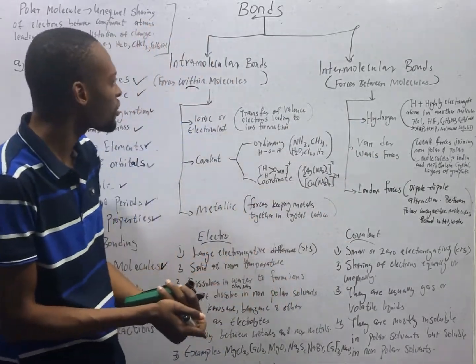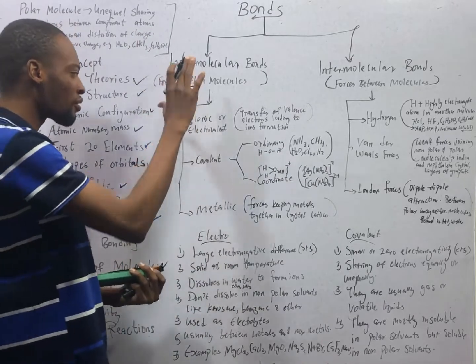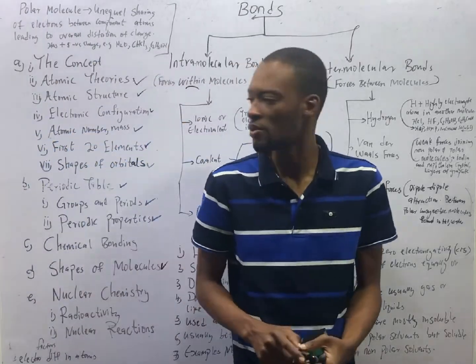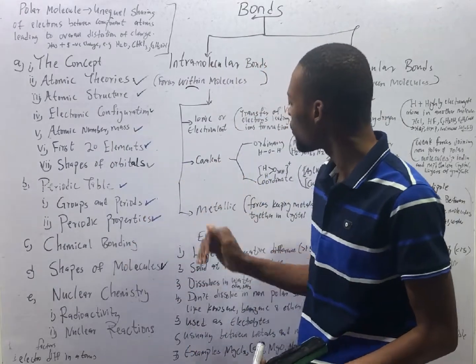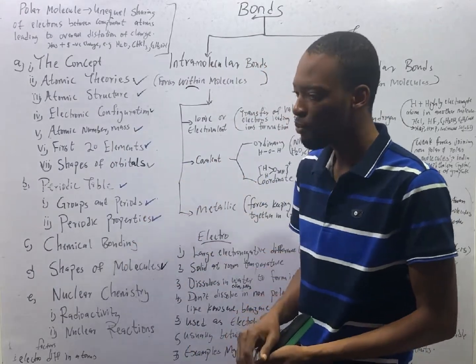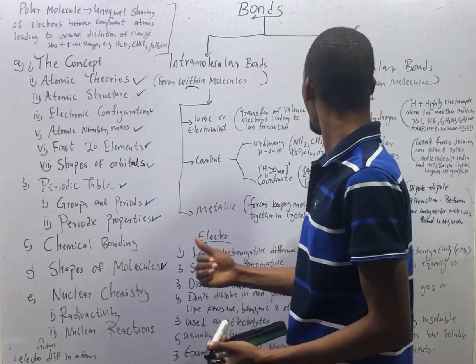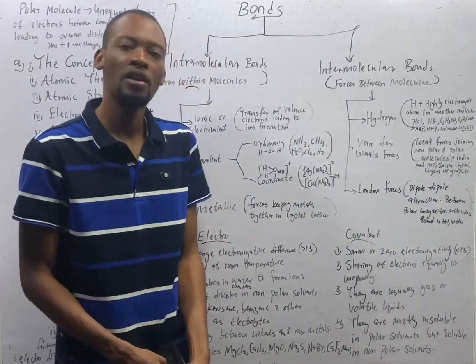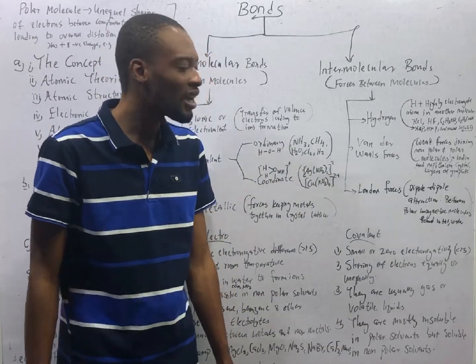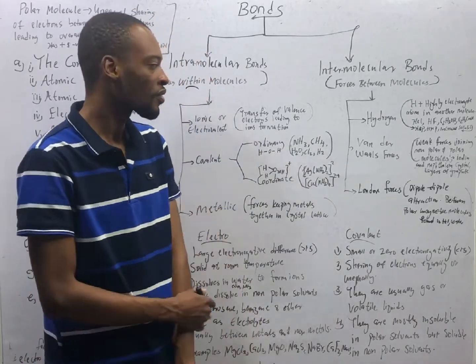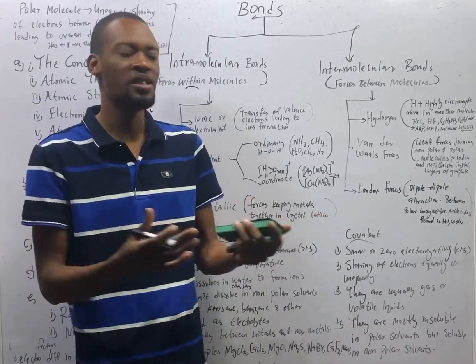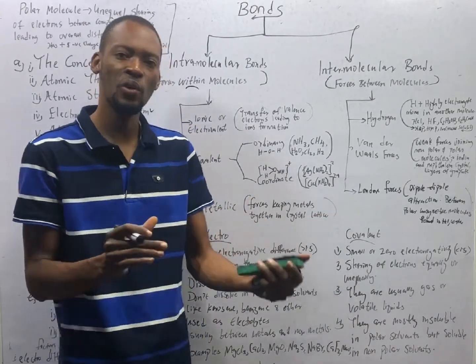Examples of intramolecular bonds are ionic bonds or electrovalent bonds, covalent bonds and metallic bonds. For intermolecular bonds, we have hydrogen bonds, van der Waals forces and London forces. Van der Waals forces are the weakest forces you can see. They are very weak forces.